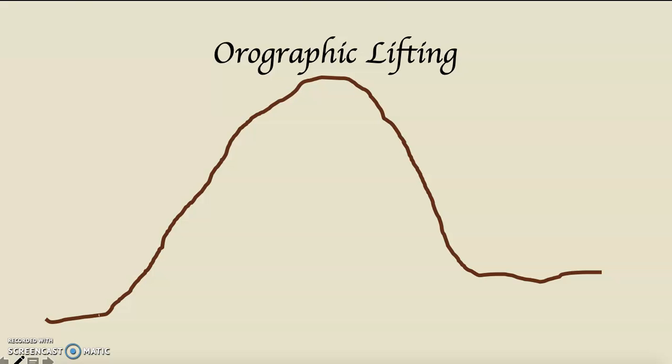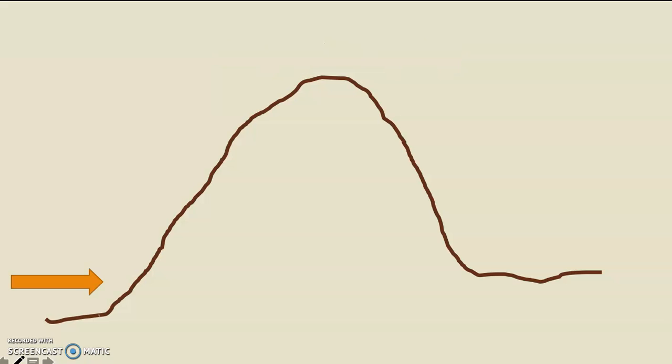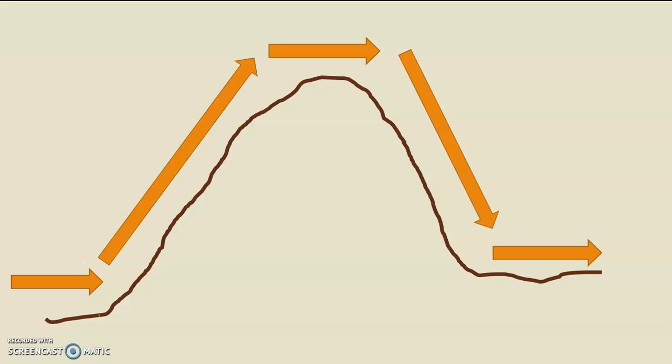We begin our look at the four ways that air is induced to rise by looking at orographic lifting, when air rises up and over a mountain. This is the one I'm going to spend the most time on, because this is the one I'm going to apply the math to. This diagram is a mountain. Air is going to run into the mountain — it obviously cannot go through the mountain, so it's going to rise up and over. I just put two words on here: windward and leeward.